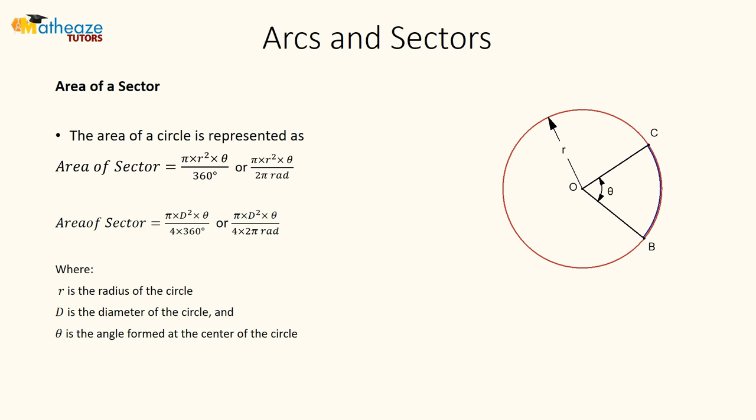Now let's take a look at the area of a sector. Remember that a sector is like a slice of pizza — it's a portion of the area of the circle. The area formula is πr² multiplied by the fractional part of the angle, the angle that represents the fraction of the circle.